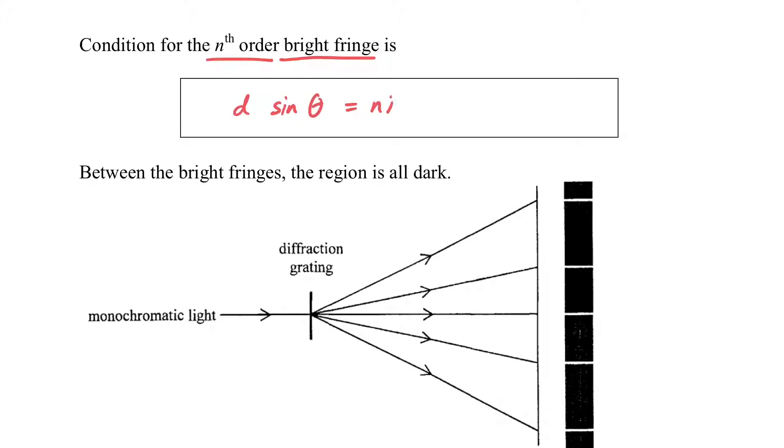But the most important is you should remember the path difference is equal to d sin θ. If we consider the bright fringe, d sin θ equals nλ, where n is the order number. Once again, d is the grating spacing. This is the equation we will use for the grating.